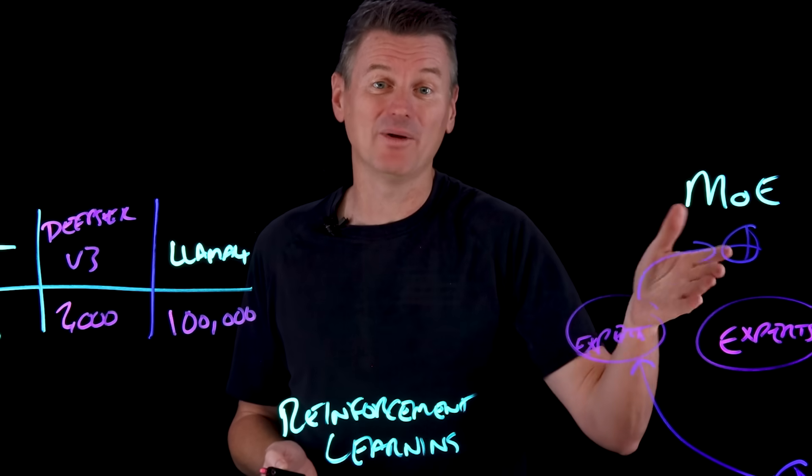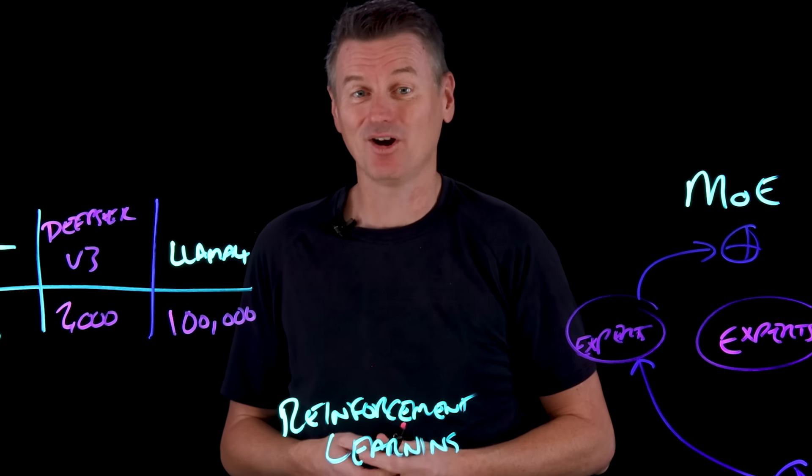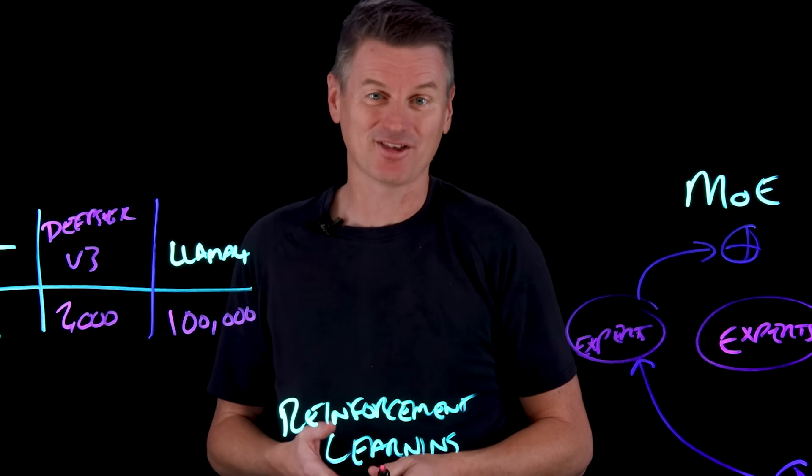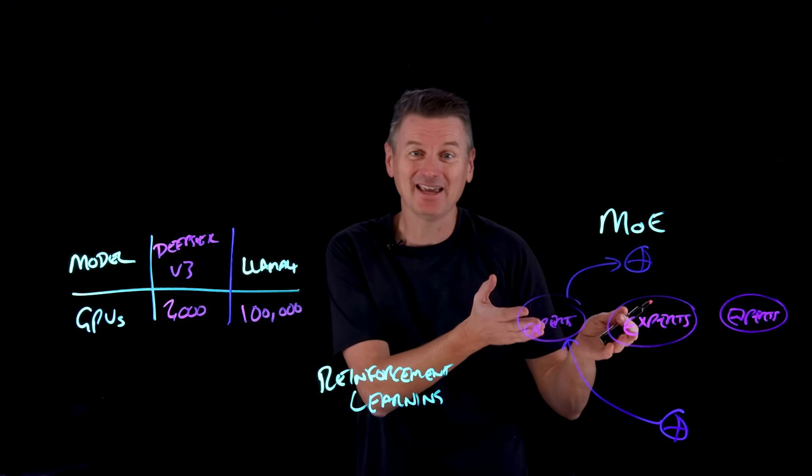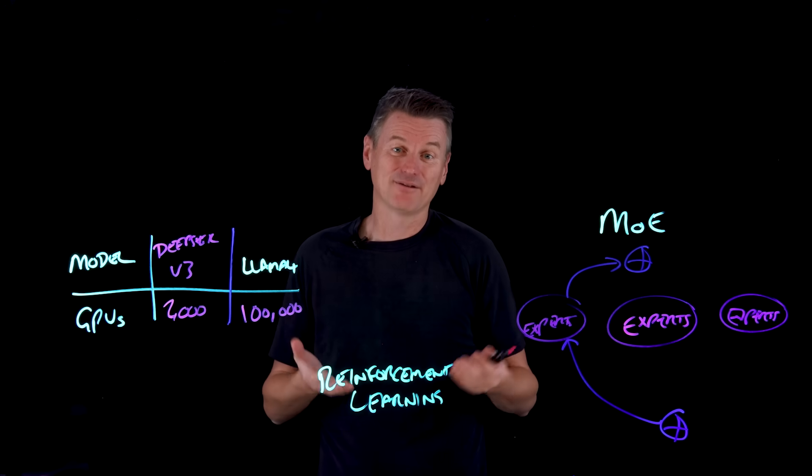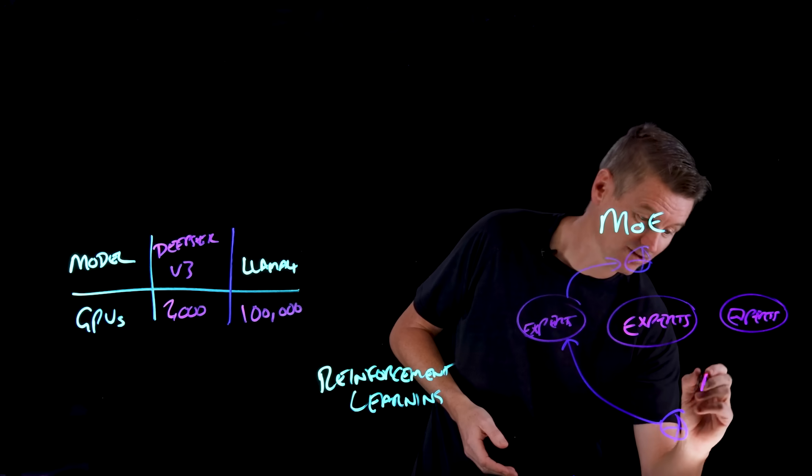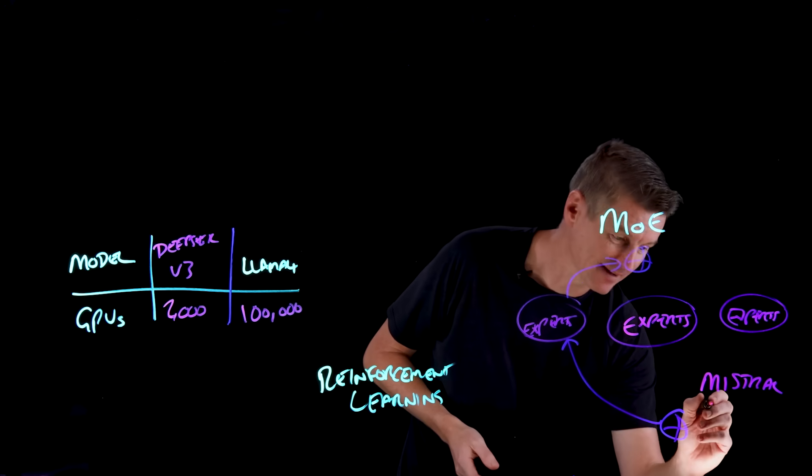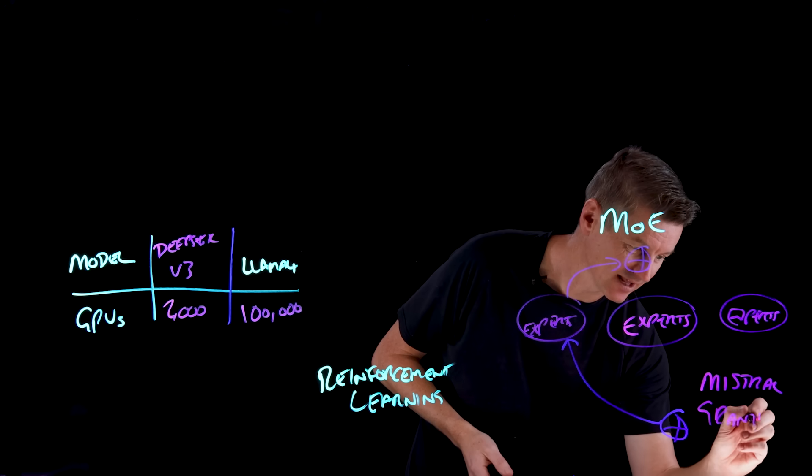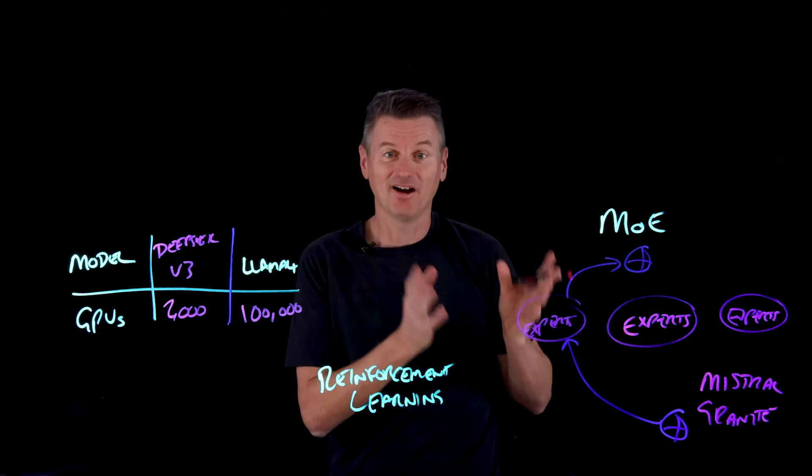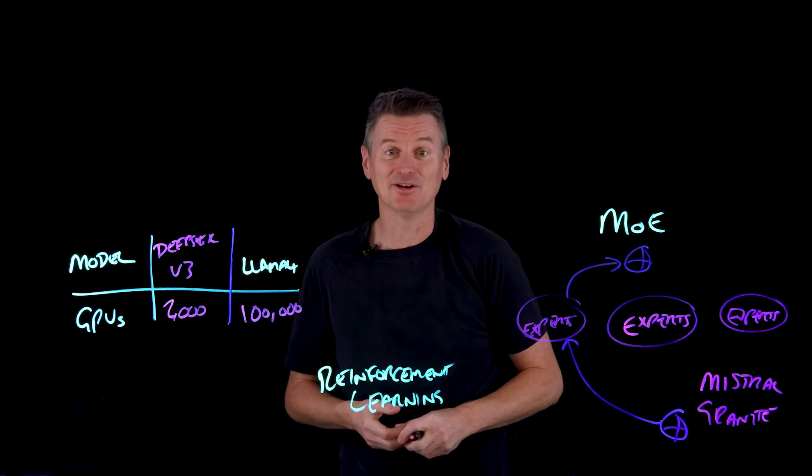So consequently, the MOE architecture reduces computational costs during pre-training and achieves faster performance during inference time. And look, MOE, that architecture isn't unique to models from DeepSeek. There are models from the French AI company Mistral that also use this. And in fact, the IBM Granite model, that is also built on a mixture of experts architecture. So there's some commonly used architecture.